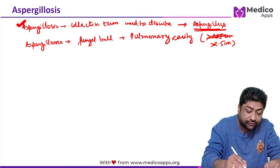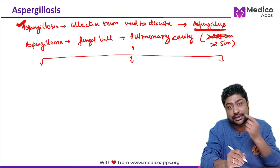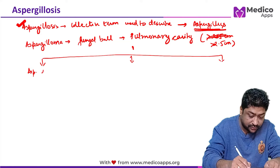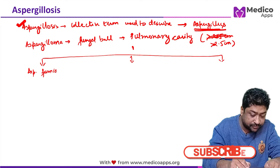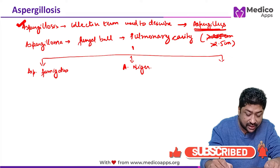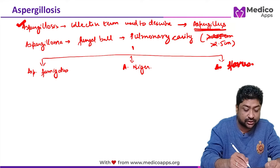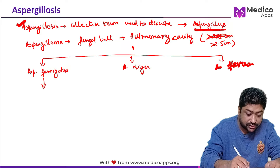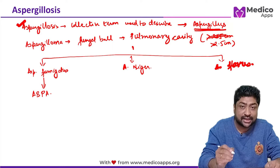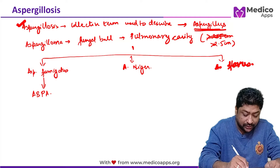There are three important species of aspergillus causing different diseases. The first is Aspergillus fumigatus, which causes ABPA — allergic bronchopulmonary aspergillosis. This is exactly what the question has been asked about, and we will see it in detail.